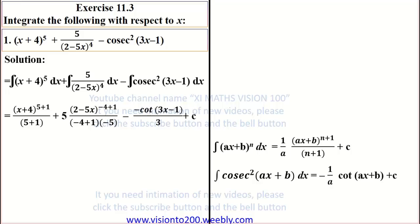Applying the formulas: (x+4)^(5+1) / (5+1), plus (1/(-5)) · (2 - 5x)^(-4+1) / (-4+1), minus (1/3) · cot(3x - 1). The coefficient of x is -5, so we use 1/(-5). For the cosec² term, applying the formula gives -cot(3x-1) / 3.